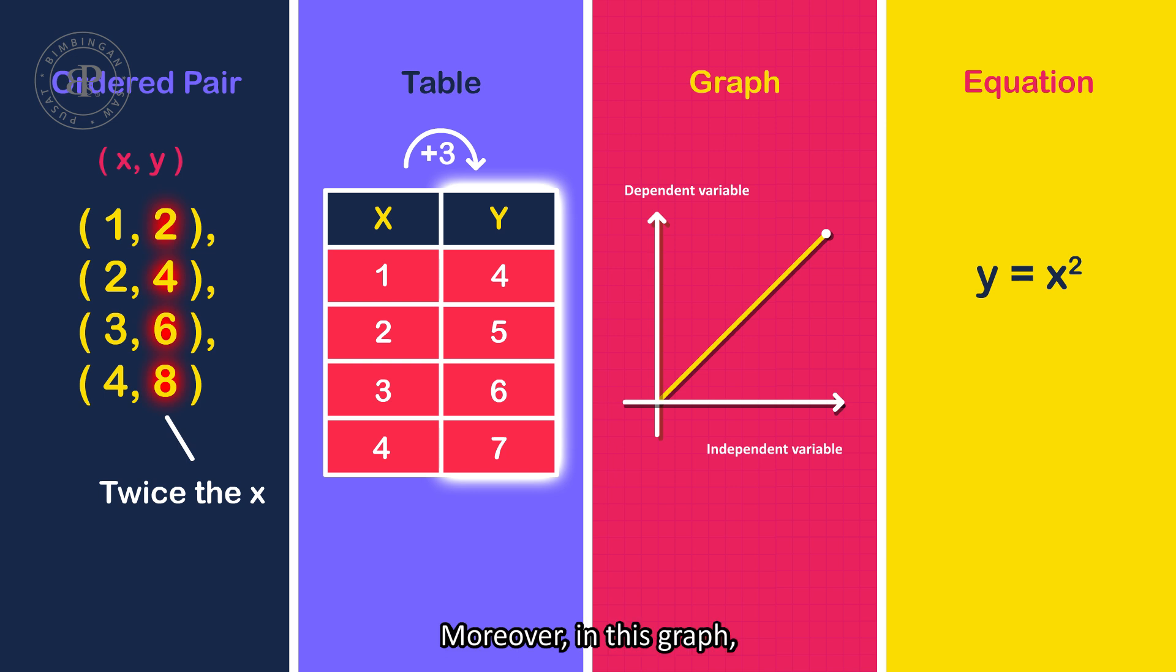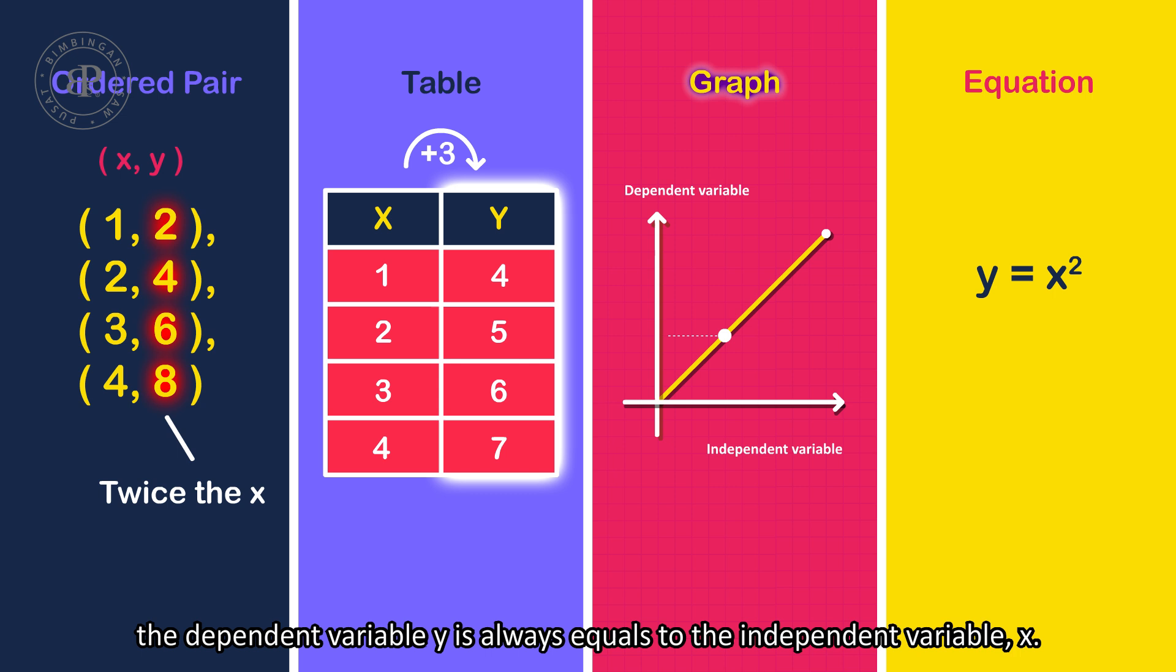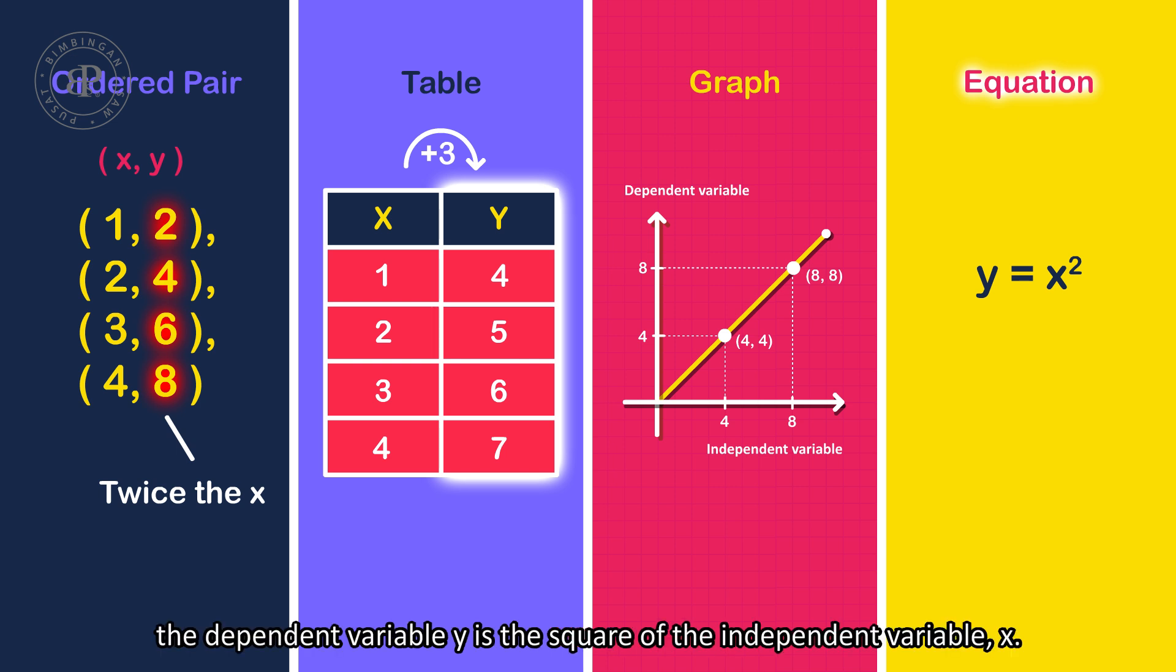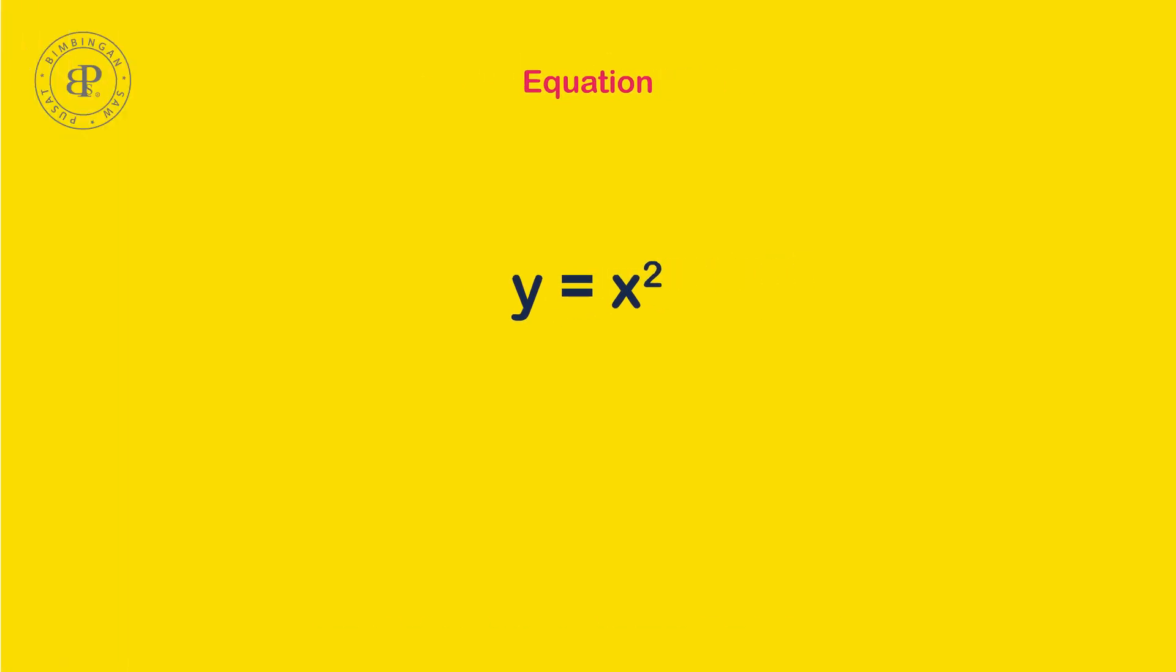Moreover, in this graph, the dependent variable y is always equal to the independent variable x. Lastly, in this equation, the dependent variable y is the square of the independent variable x.